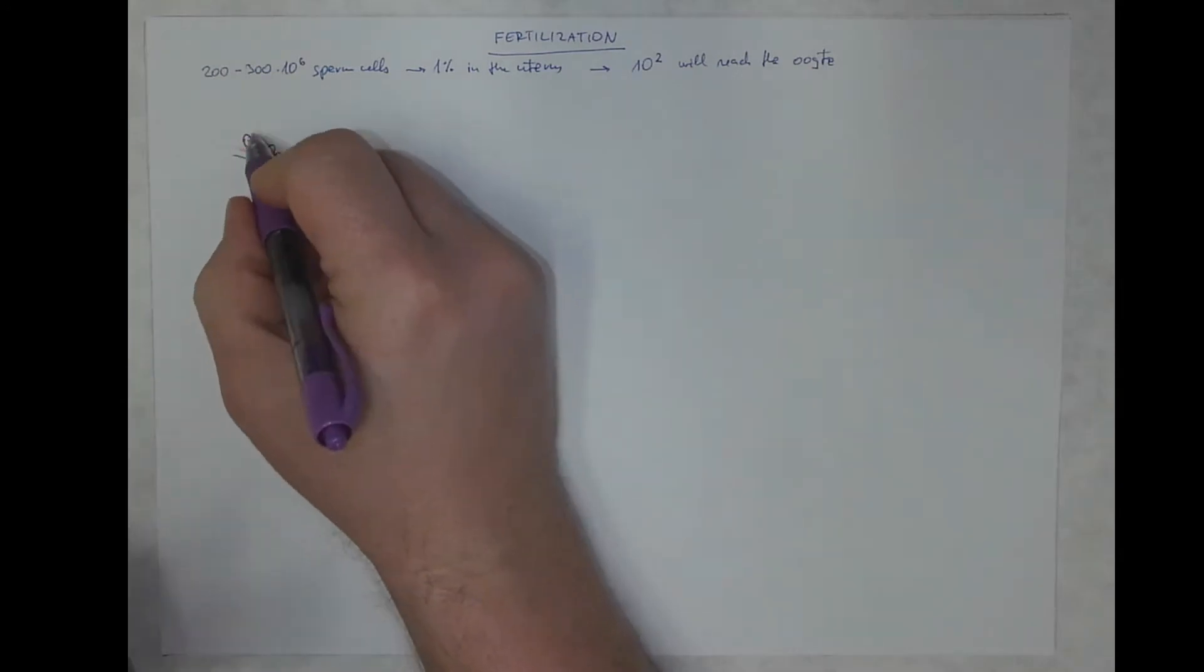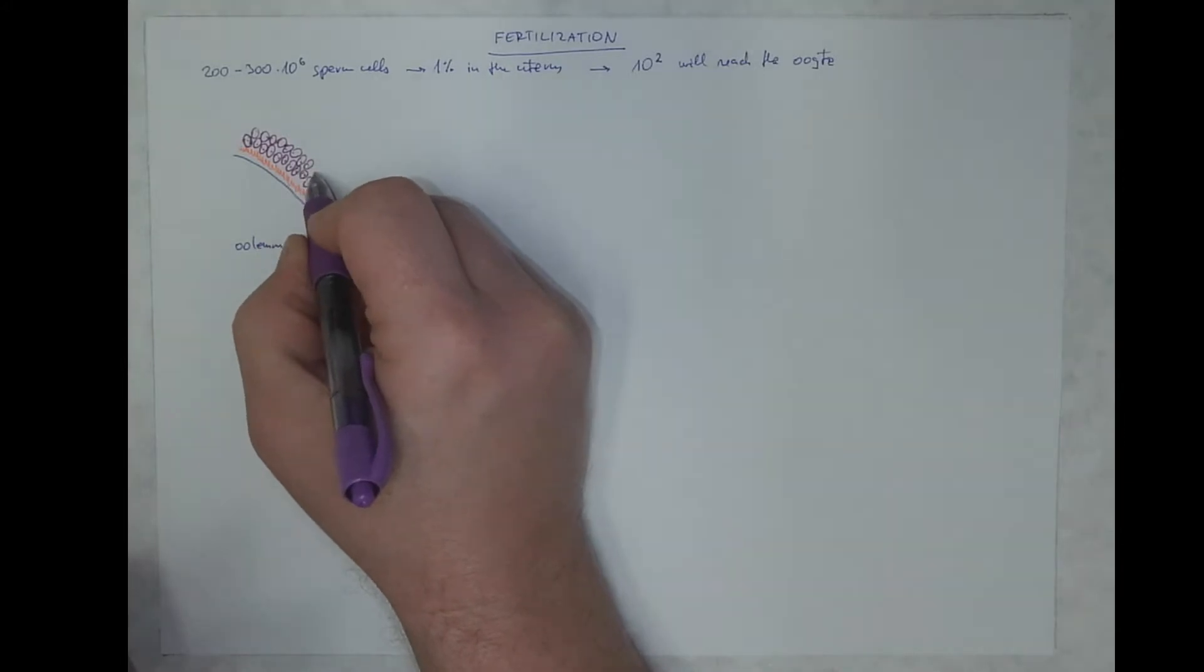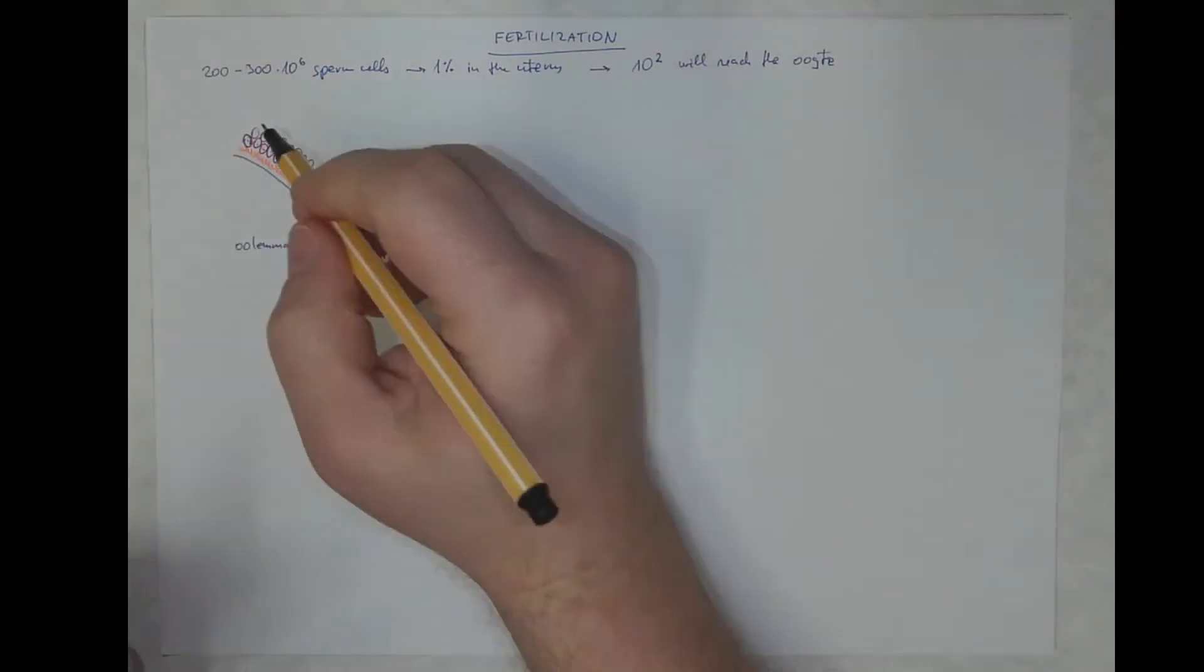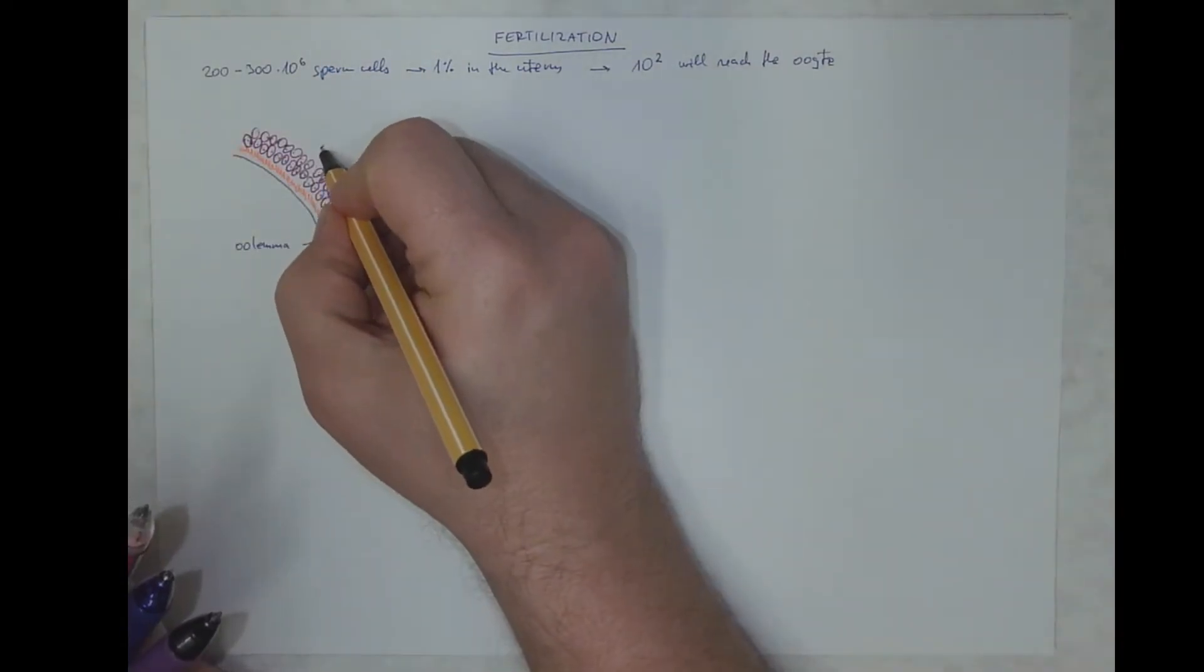And here we got the corona radiata cells. And they could be, for example, two layers of these.